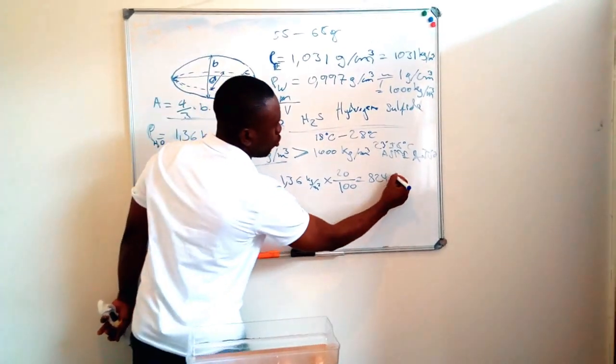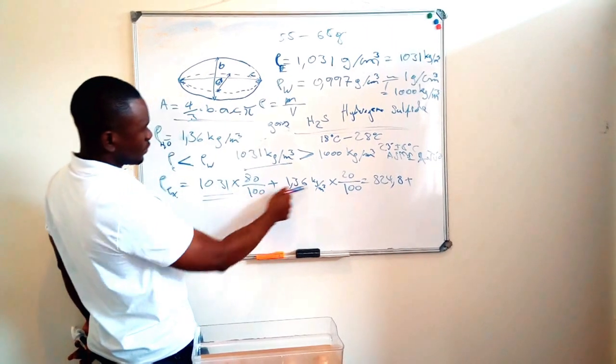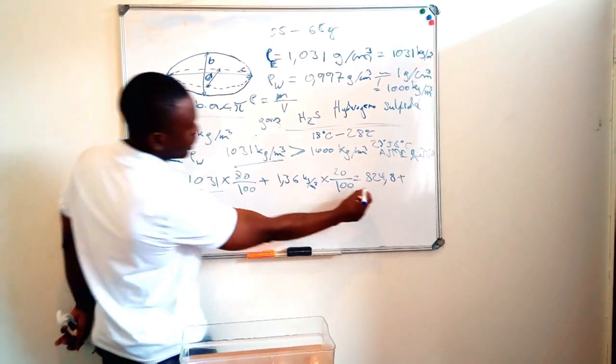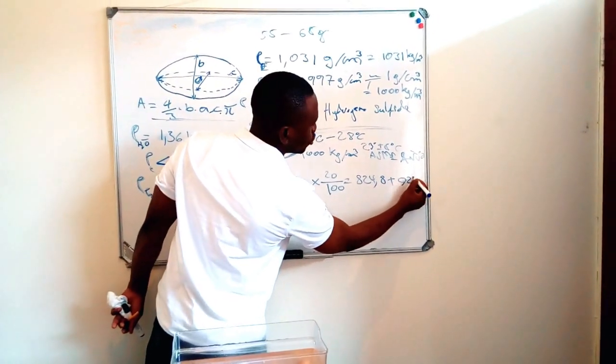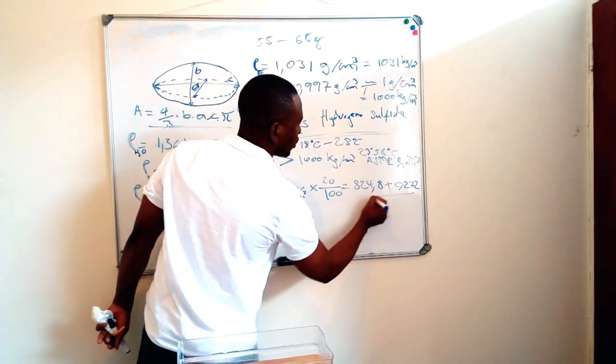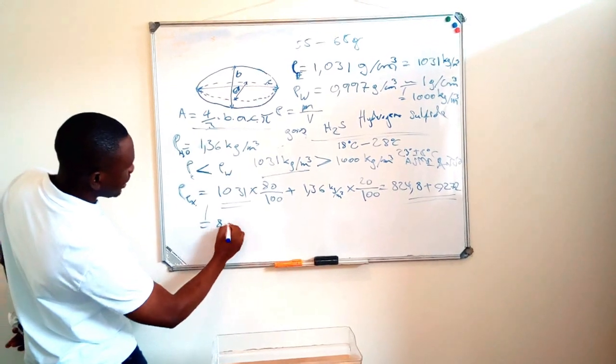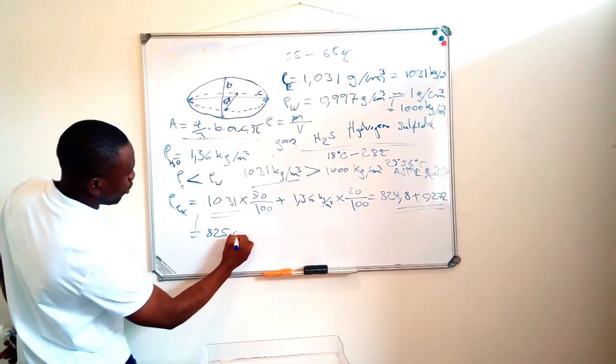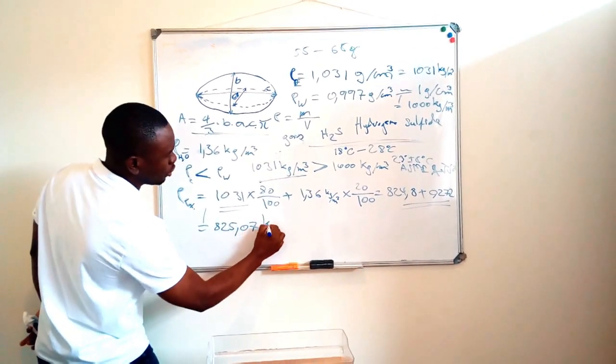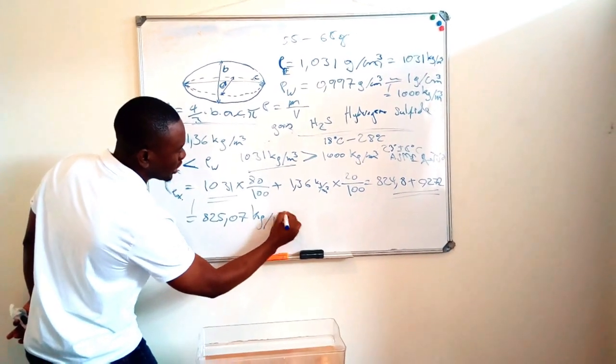This will be equal to 824.8 plus 0.272. So the total would be equal to 825.07 kilograms per cubic meter.